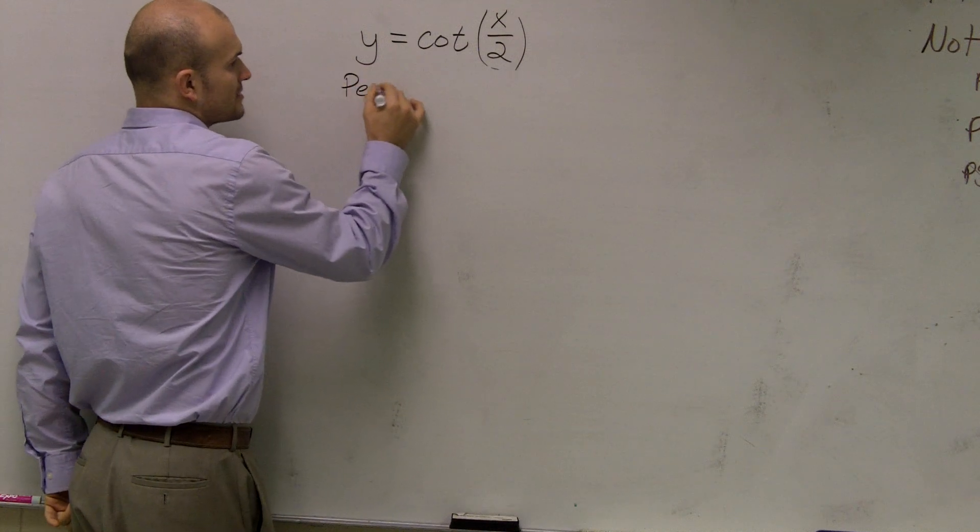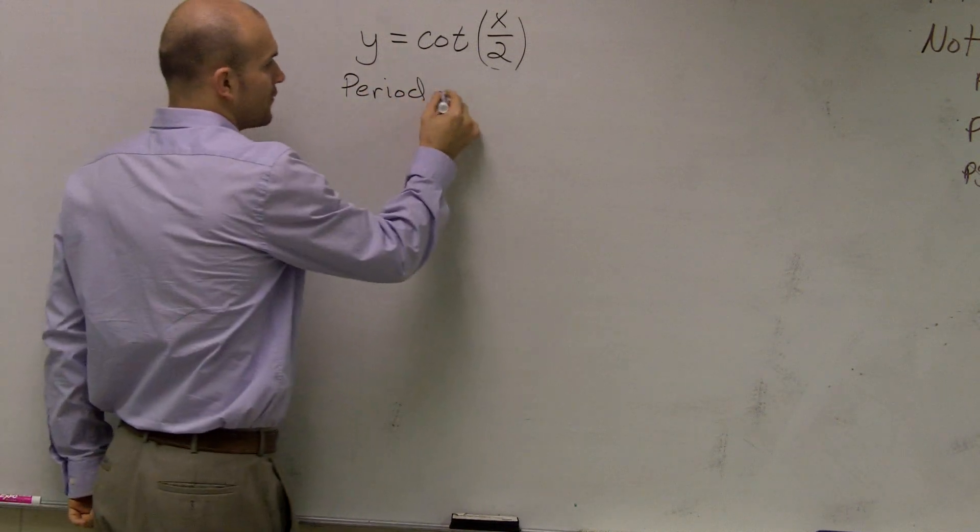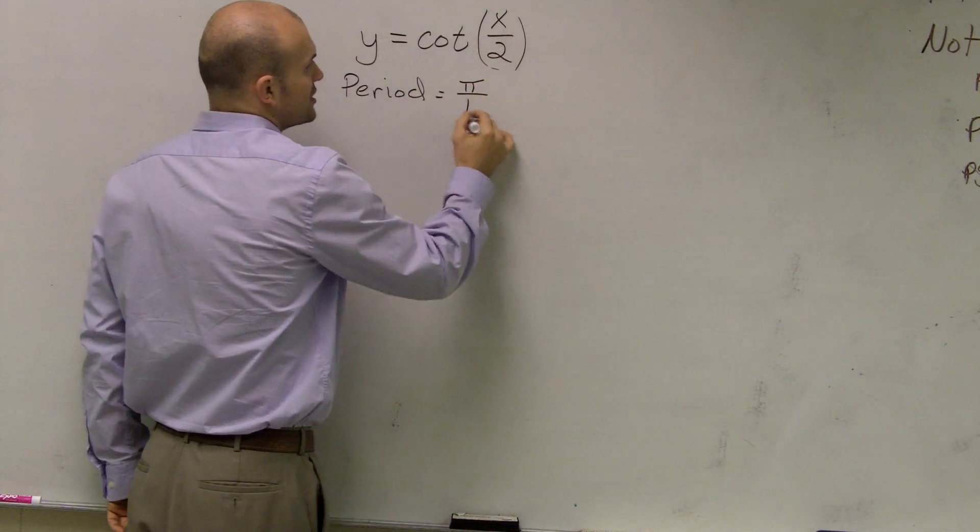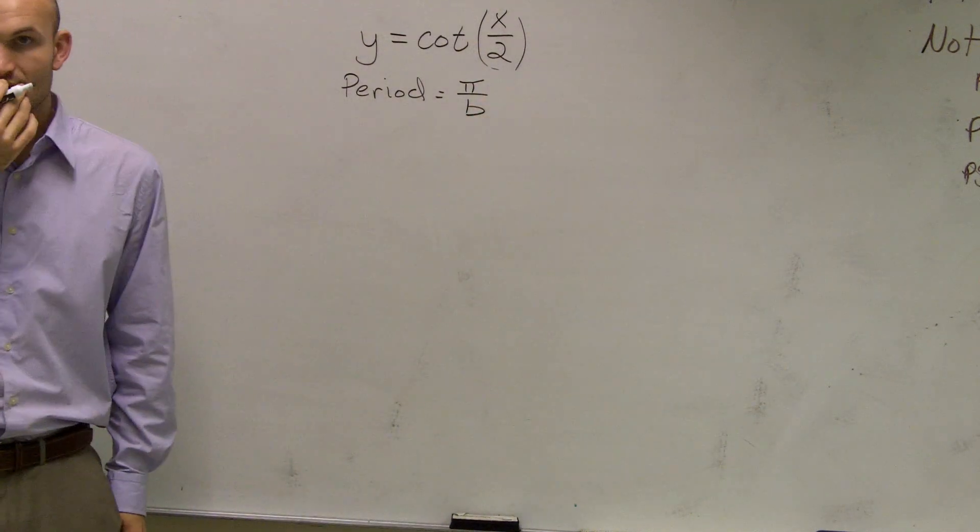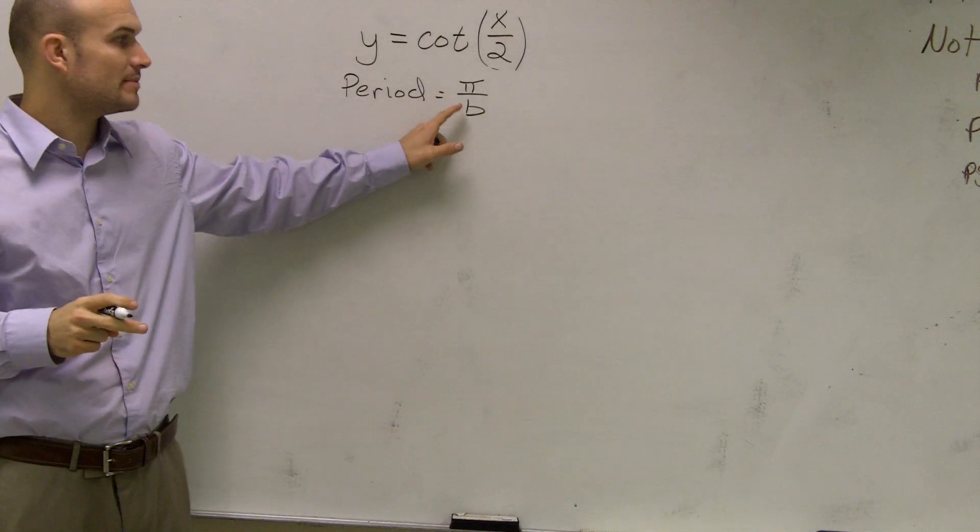But we do need to figure out what the period is. So please remember that the period for a cotangent and tangent function is π over b. For sine and cosine, it was 2π over b. Now it's going to be π over b.